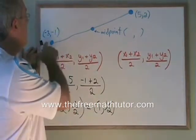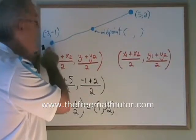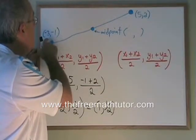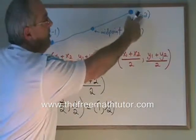But what happens if instead of calling this point 1 and naming x1 and y1 as negative 3 and negative 1, what if we start at the other end?